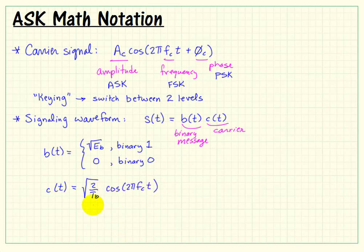The carrier has a special amplitude here, square root of 2 over t sub b. And that gives a unit energy over a single bit interval. That way, the binary message can control how much energy is getting transmitted.